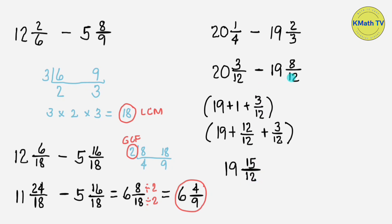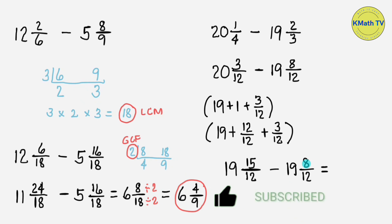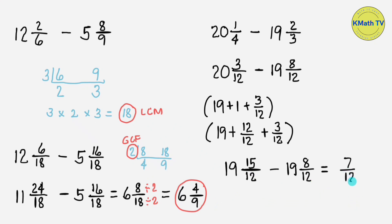Now let's copy the subtrahend and subtract: minus 19 and 8 twelfths. Subtract the fractions: 15 minus 8 equals 7, and copy the common denominator 12. Then subtract the whole numbers: 19 minus 19 equals 0. Since the difference is 0, we don't write it. The answer is 7 twelfths. Since 7 and 12 do not have any common factor other than 1, 7 twelfths is already in lowest terms. This is the final answer.